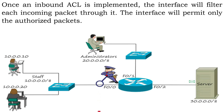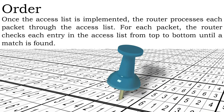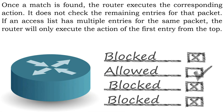Once an inbound ACL is implemented, the interface will filter each incoming packet through it and will permit only the authorized packets. Order: once the access list is implemented, the router processes each packet through the access list. For each packet, the router checks each entry in the access list from top to bottom until a match is found. Once a match is found, the router executes the corresponding action.